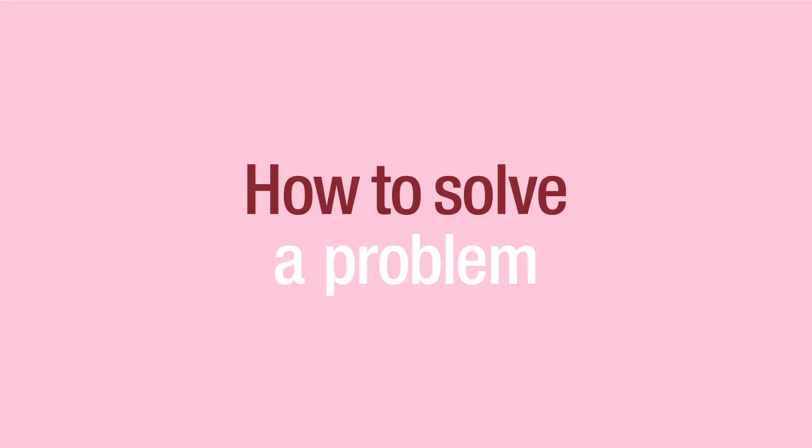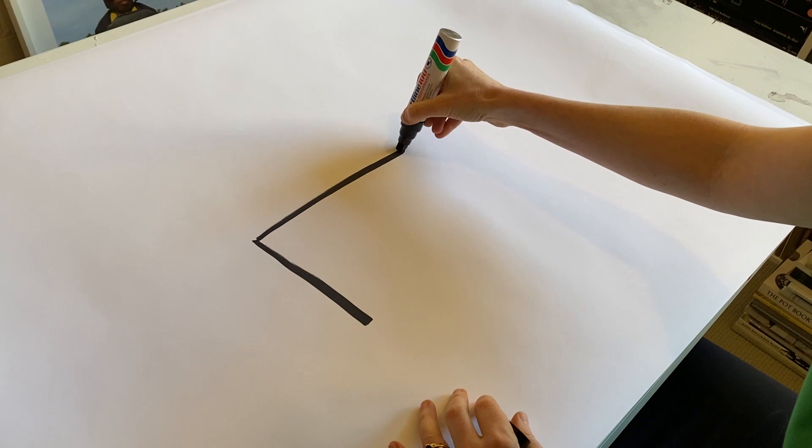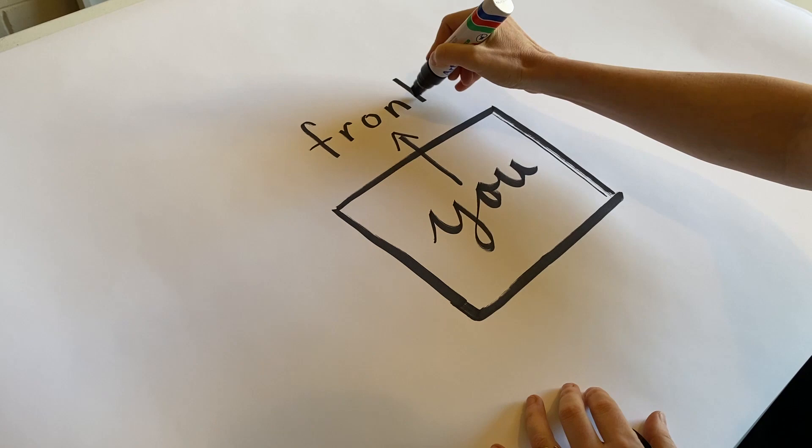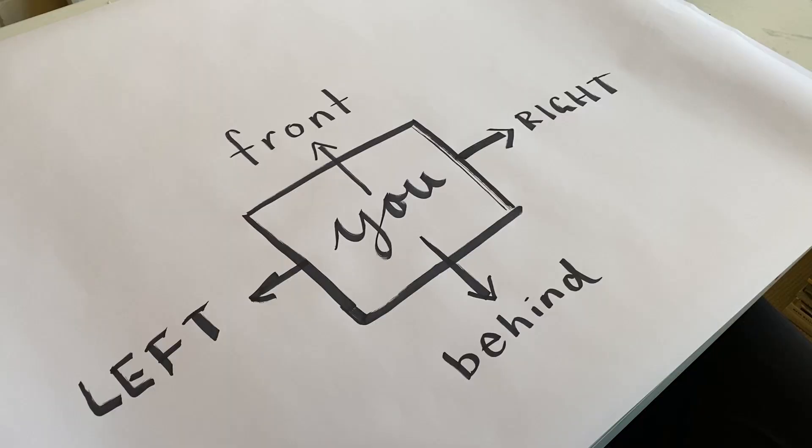I've called this activity 'how to solve a problem.' However, we all know that if a problem was easy to solve then it wouldn't be a problem anymore and you wouldn't need to watch this video. So today what we're actually going to do is move a problem around the four directions of our body — front, side to side, and behind. You can do this activity right where you are; you don't need anything, but you can also draw it out on a piece of paper too. That might be helpful.